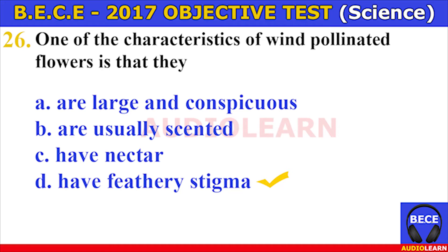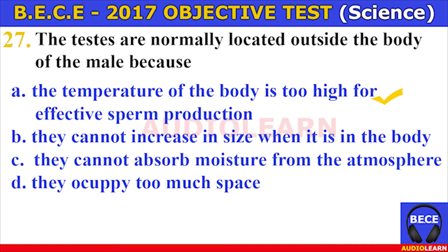One of the characteristics of wind-pollinated flowers is that they have feathery stigma. Number twenty-seven. The testes are normally located outside the body of the male because A. the temperature of the body is too high for effective sperm production, B. they cannot increase in size when inside the body, C. they can absorb moisture from the atmosphere, D. they occupy too much space. The answer is A. The temperature of the body is too high for effective sperm production.